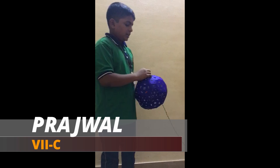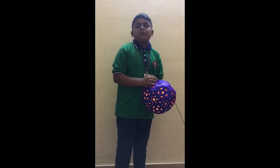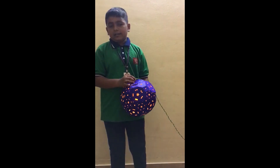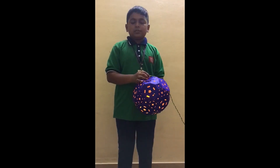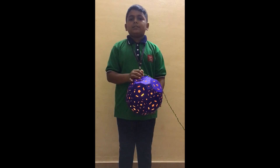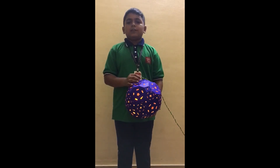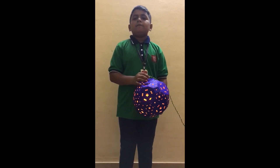I have made a truncated icosidodecahedron lamp. Truncated icosidodecahedron is an Archimedean solid. It has sixty-two faces: thirty squares, twenty hexagons and twelve decagons. We have witnessed twenty beautiful lamps that are unique and different in their own way.